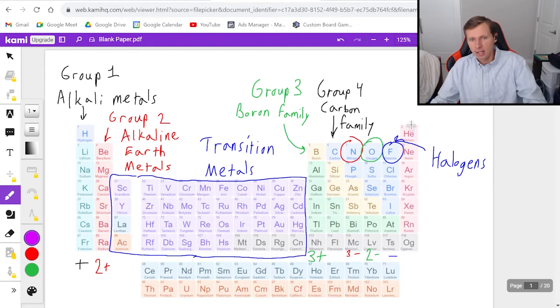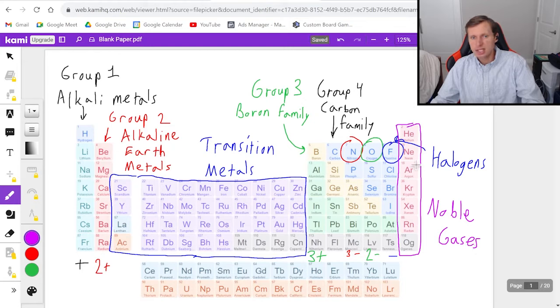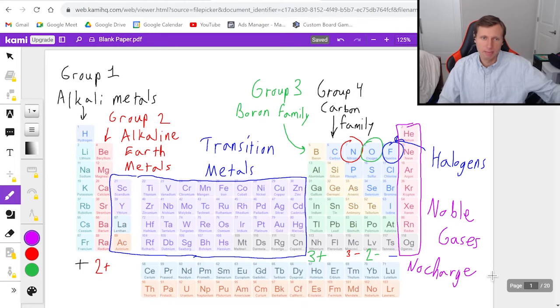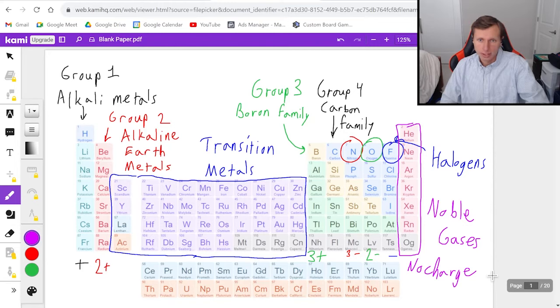And then finally, the last category, group eight, we have the noble gases. And the noble gases are so special because these elements basically never form compounds. And that's because their electron shell is already full. So these guys, I'm just going to say no charge. It's very rare that any of the noble gases would ever form a compound with anything. Most of them exist in their natural state. In other words, we all know what helium is in balloons. We all know what neon is in neon signs. They exist as their own element in nature for most of these.